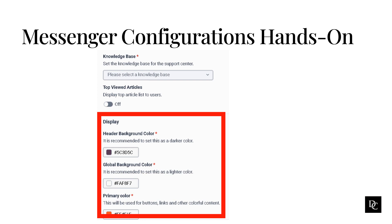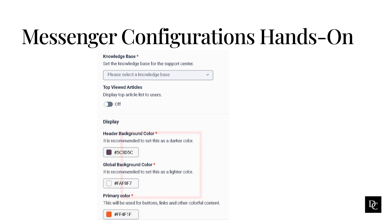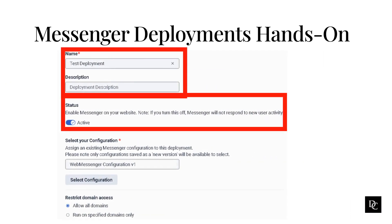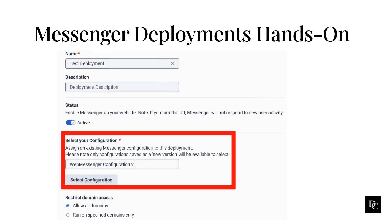Now that we have created our Messenger configuration, let's take a look at the Messenger deployments. Messenger enables web messaging by providing a predefined Messenger window that customers use to interact with bots and agents. Before you create a Messenger deployment, configure Messenger and save a version of the configuration. Under Message, click Messenger Deployments. Click New Deployment. Enter a name and description. Under Status, use the toggle to set the status of the Messenger deployment. Under Select Your Configuration, click Select Configuration to select a version of a Messenger configuration to assign to this deployment. In the Assignment pane, navigate to the Messenger configuration you want to assign and click the name of the Messenger configuration. Select the version you want to assign. Click Save.